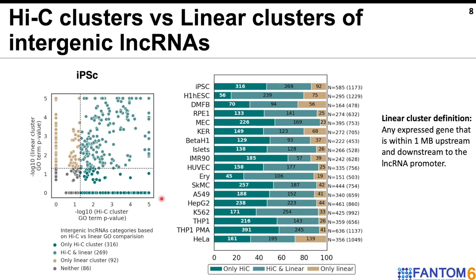The research shows that up to 58% of lncRNAs have at least one enriched GO term depending on the cell type. Further comparison between the Hi-C cluster and the linear cluster shows that the Hi-C cluster can annotate many more lncRNAs compared to the linear cluster. Overall, this shows that the information contained by the Hi-C cluster is distinctive and cannot be recapitulated by a linear cluster.